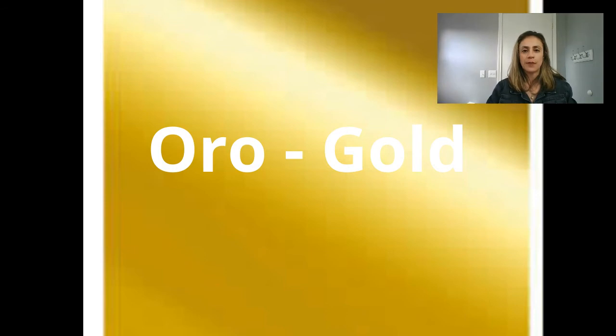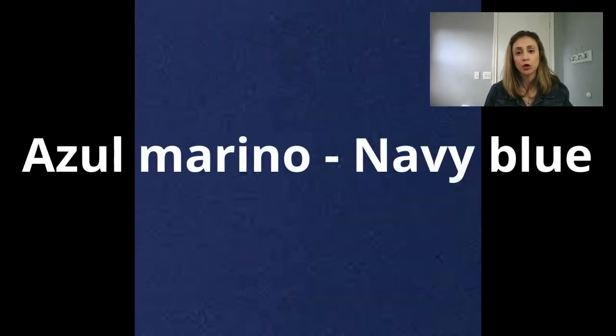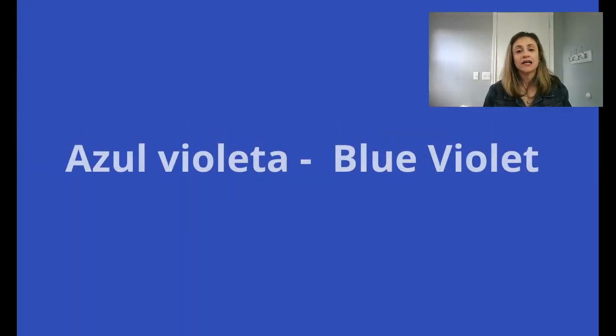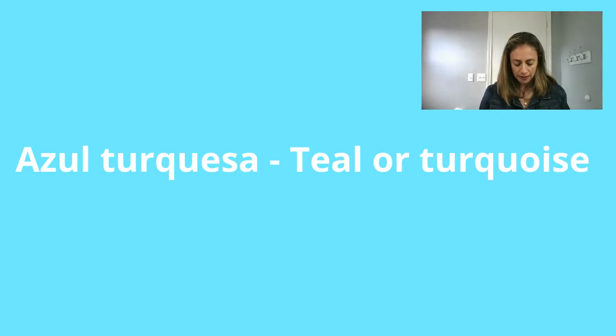Now, let's suppose we want to talk about one specific color. I'm going to use blue — we use blue a lot, so we name different blues. The first one would be azul marino — navy blue. Also, azul violeta — violet blue. Azul cielo — if you know what cielo is, that's sky, so sky blue — azul cielo. We also use a lot azul turquesa — turquoise.